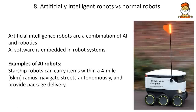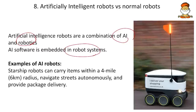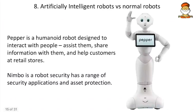The difference between an AI robot and a normal robot: a normal robot requires continuous signaling and command to function, but artificial intelligence requires very minimum command — with minimum command and its own thinking capacity, it can work. AI robots combine AI and robotics with software embedded as the brain. The Starship robot, for example, can carry consumer items within a 6-kilometer radius, navigate streets, and deliver packages autonomously.